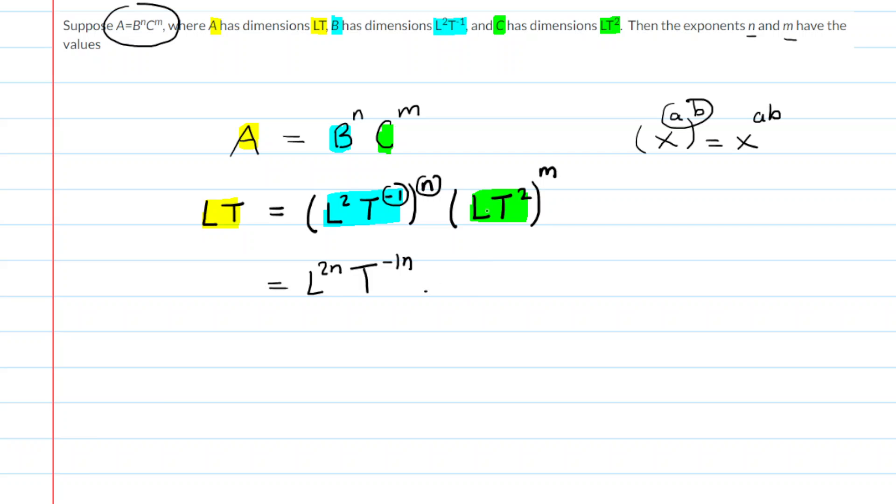In the next term, we have the same idea. Note that this l has a power of 1. And when you multiply m and 1, you get l to the power of m. And then when you multiply the m by the 2, you get t to the power of 2m.